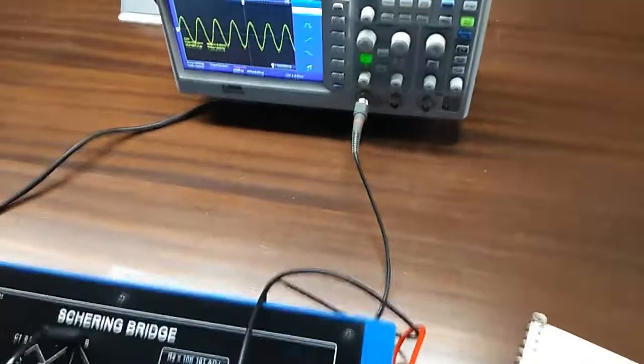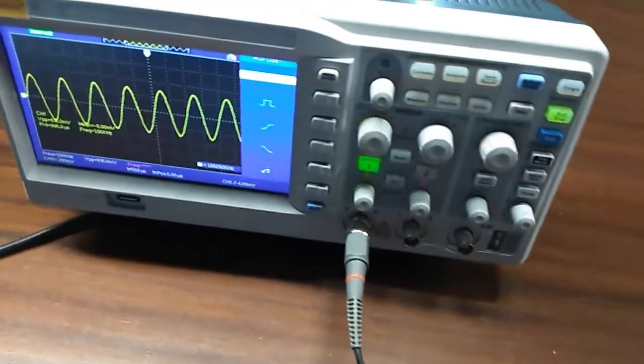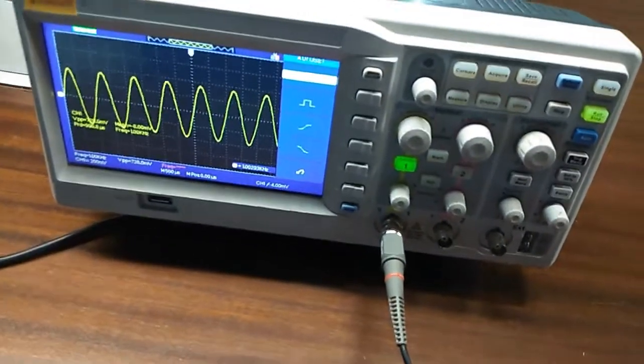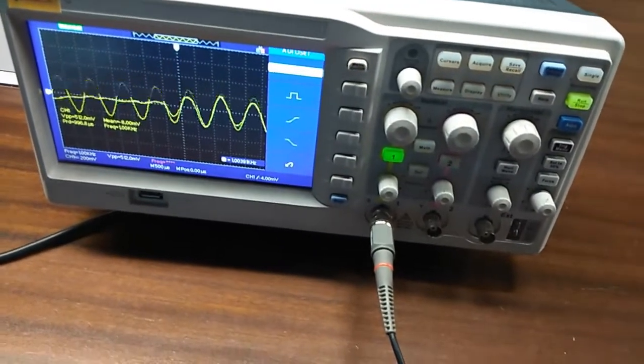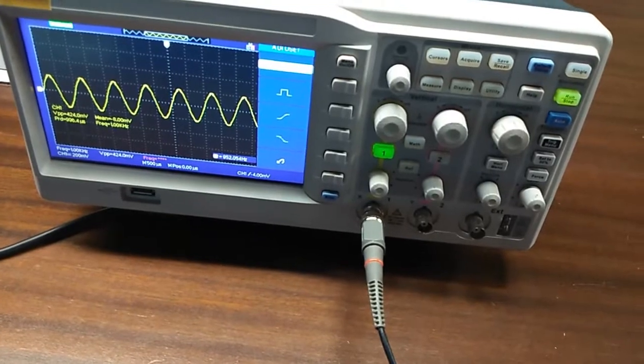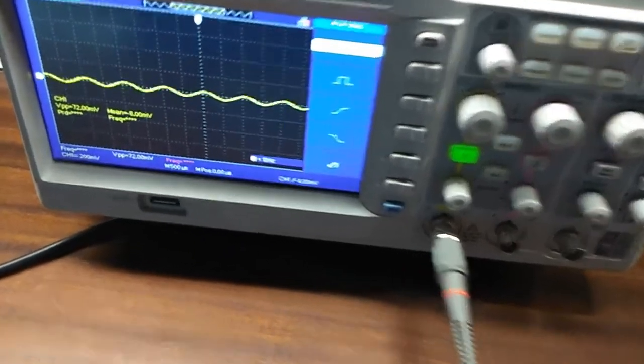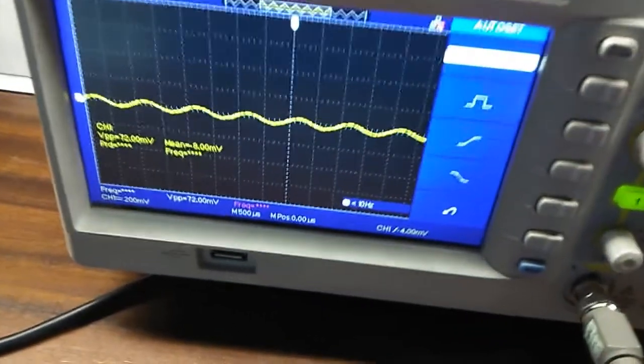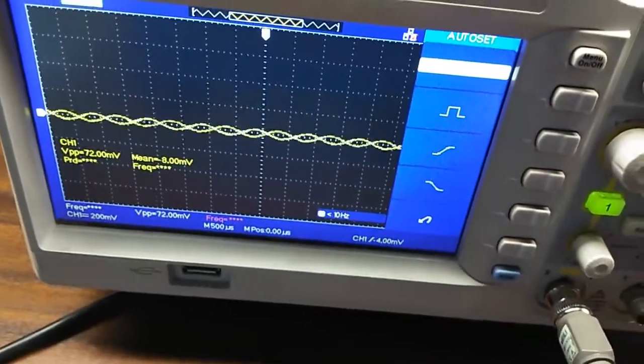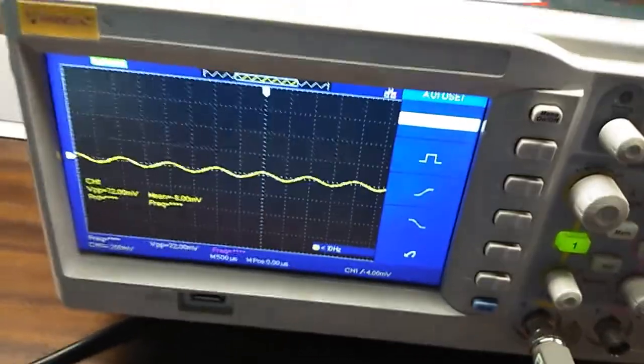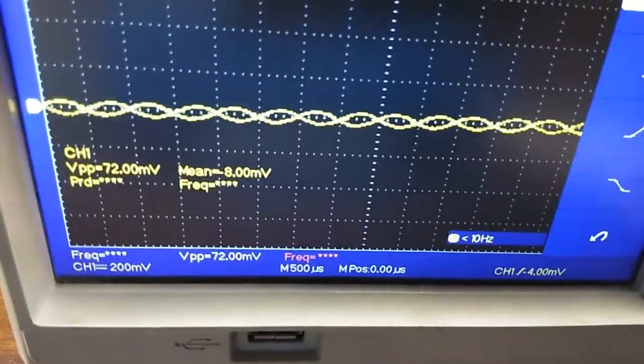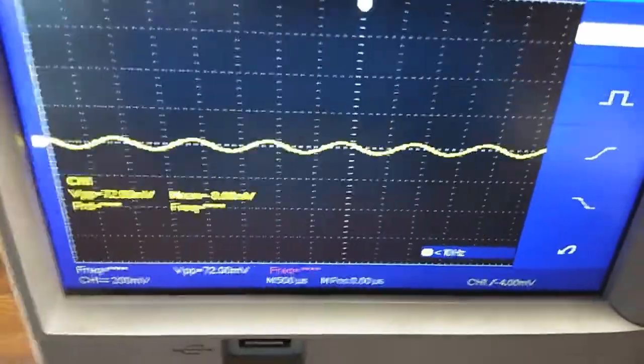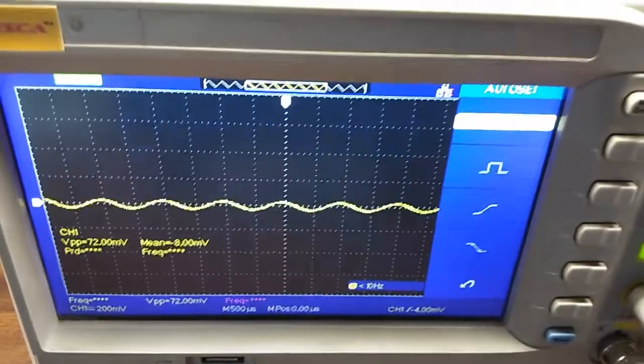We can also use CRO by varying the R2. See where the wave is almost low, frequency is low, and take that value of R2 and calculate the unknown capacitor value and its reactance.